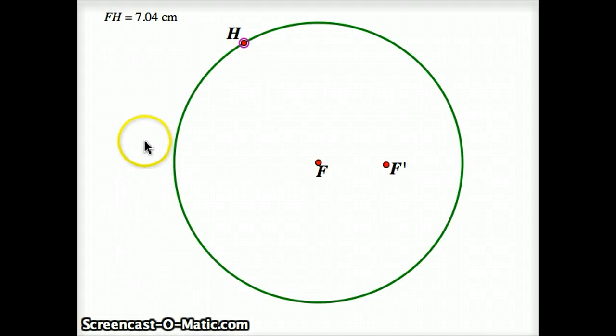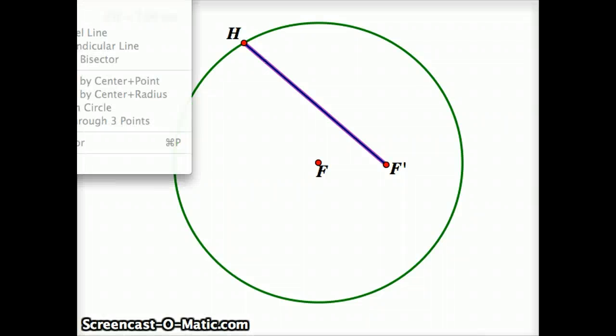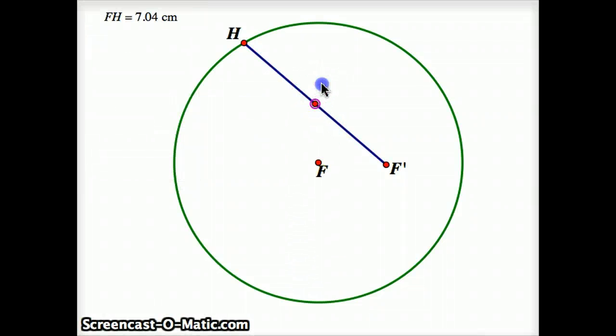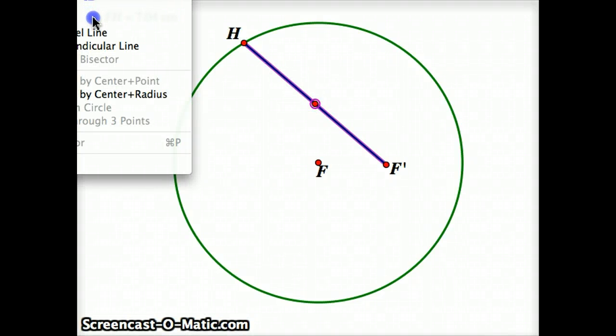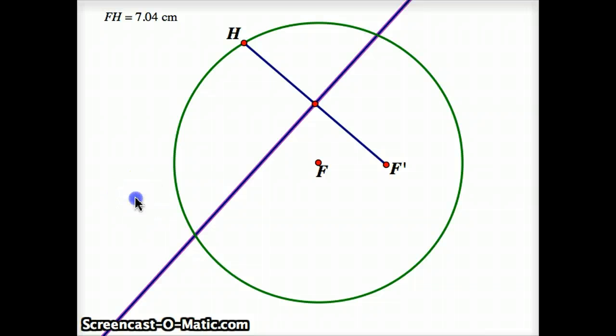Well, watch what I'm going to do. I'm going to make a line segment that connects H to F prime, and then on that line segment, I'm going to make the midpoint, and I'm going to then make a perpendicular line. So this is the perpendicular bisector of H F prime.